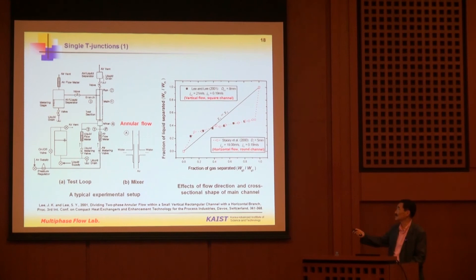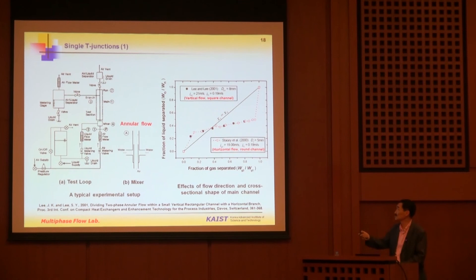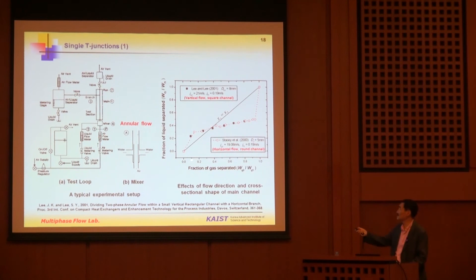Flow goes to the run and branch, and we control valves on the run side and valves on the branch side. If you open the valve a little more on the run side and reduce the opening on the branch side, the pressure at the junction remains the same. You can thus control how much flow goes out to the branch or to the run.